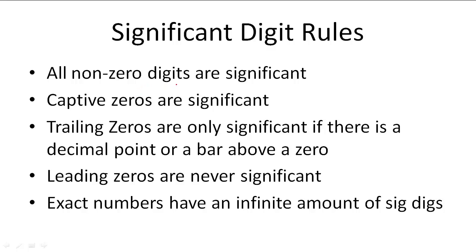Rule one: all non-zero digit numbers are significant. The second rule is that captive zeros are significant. This means that in a number like 3,0,3 — the 3s are significant because they're non-zero digits, and the zero is trapped between them, making it captive and therefore significant. So 3, 0, and 3 are all significant — there are 3 significant digits.